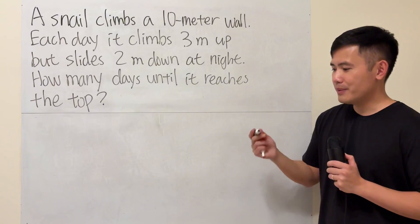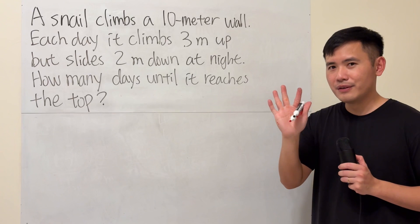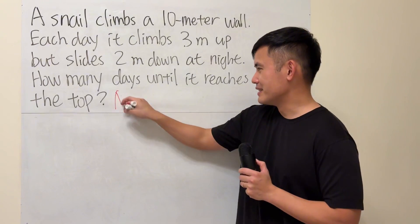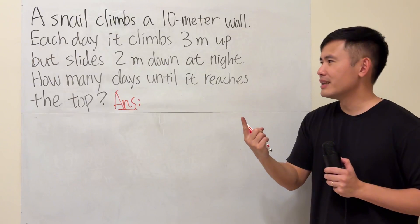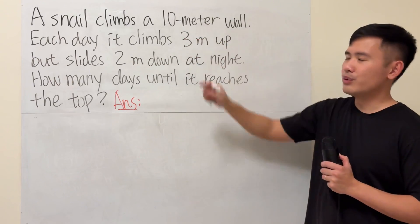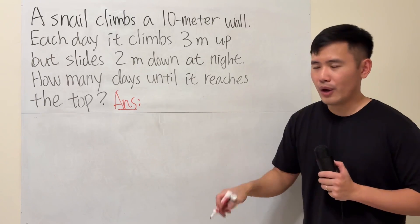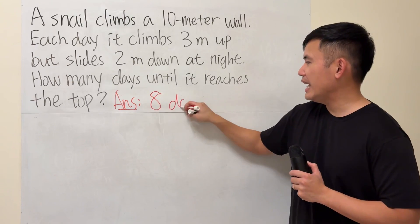What do you think? Well, I'm going to give you guys 5 seconds. 5, 4, 3, 2, 1. Here is the answer. 3 minus 2 is just 1, right? 1 meter's progress each day. We have to get to 10, so 10. No, the answer is 8. 8 days.